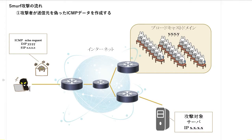スマーフ攻撃の流れを見ていきましょう。まずは攻撃者が送信元を偽ったICMPデータを作成します。ICMPのデータでエコーリクエストなので、聞こえていたらメッセージ返してくださいねというようなメッセージです。そのソースIP、本来は攻撃者のIPアドレスになるはずなんですが、そこをうまく偽装して、ソースIPとして攻撃対象のサーバーのIPアドレス、ここでいうとXXXXに設定します。そういったデータを作成します。